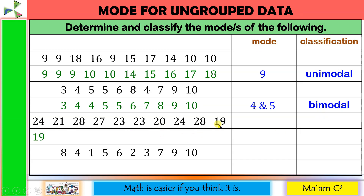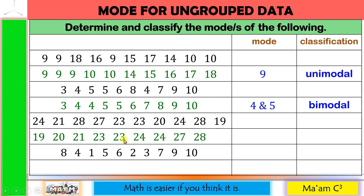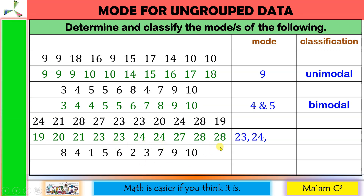Example 3 for mode: arranging the data gives 19, 20, 21, 23, 23, 24, 24, 27, 28, 28. Counting: 19, 20, 21, and 27 each appear once; 23, 24, and 28 each appear twice. So 23, 24, and 28 all appear the most. Since there are 3 modes, this is trimodal.